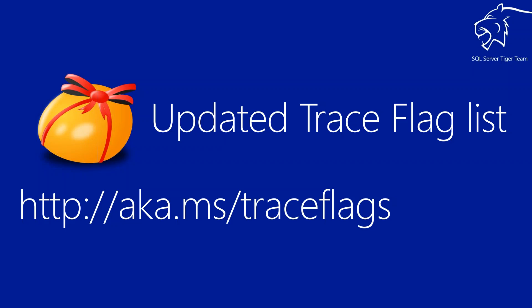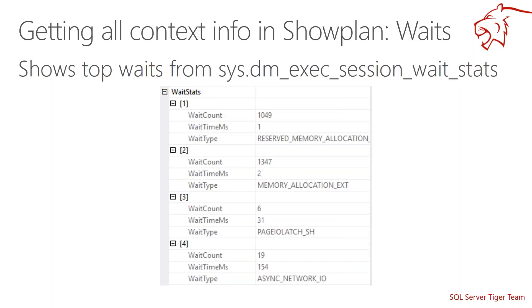We have compiled a list of all documented trace flags previously scattered in several KBs and other sources into the master trace flag page in Books Online, and you can use the short URL that's easier to remember. Something else we added to showplan: information about wait stats — specifically the wait stats that were in play in the session executing the query at the given point in time where I collected the plan. I no longer need to guess from a side-collected wait stats collection and try to match timing. This is runtime information, so you'll only see it in an actual execution plan, but you'll see what this specific query waited on when it was executing.